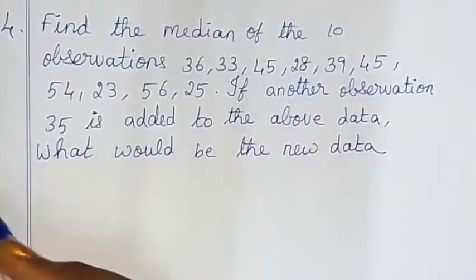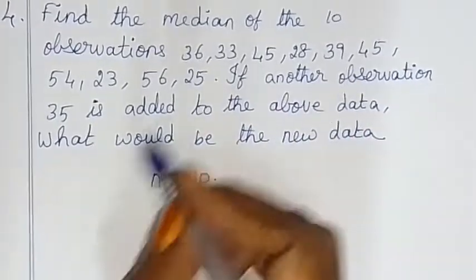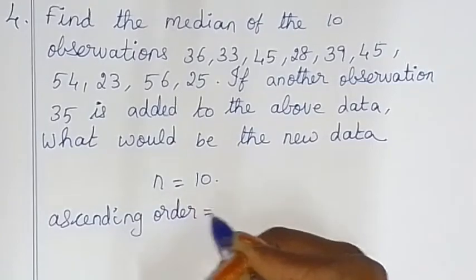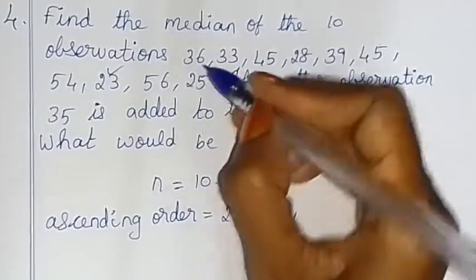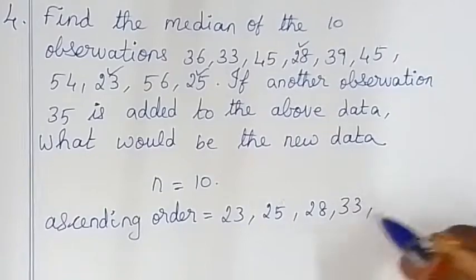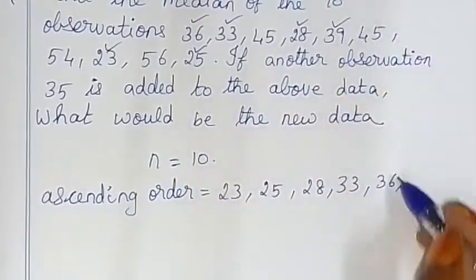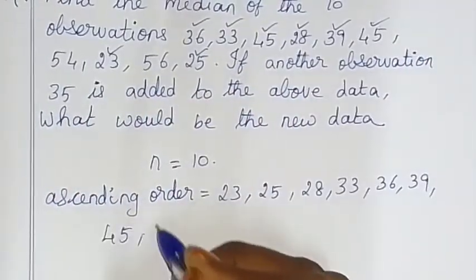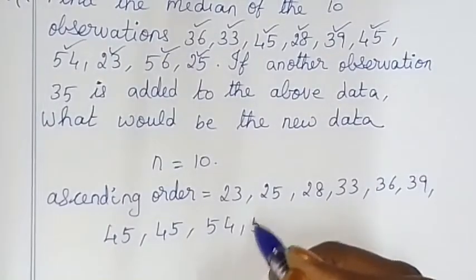First, with N = 10 terms, arrange in ascending order: 10, 23, 25, 28, 33, 36, 39, 45, 54, 56.